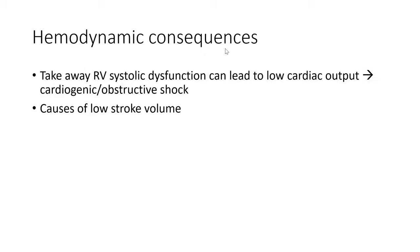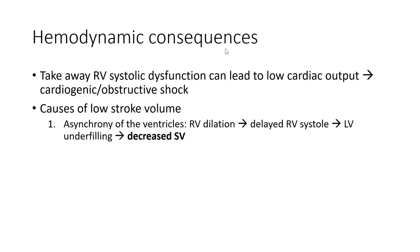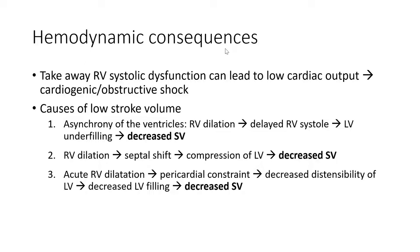The big hemodynamic takeaway is that RV systolic dysfunction can lead to low cardiac output and cause a cardiogenic or obstructive shock-like state. The mechanisms of low stroke volume in RV dysfunction include: first, asynchrony of the ventricles — RV dilatation delays RV systole so that while the LV is still filling, the RV may still be in systole, decreasing stroke volume; second, septal shift from RV dilatation compressing the LV; and third, in acute RV dilatation, the RV occupies more of the pericardium, decreasing LV distensibility, LV filling, and stroke volume.